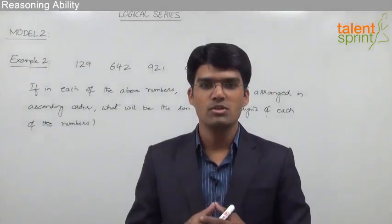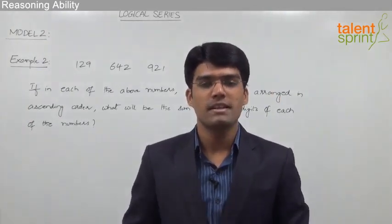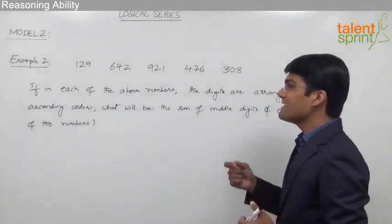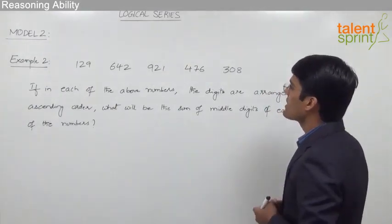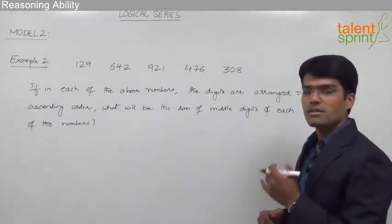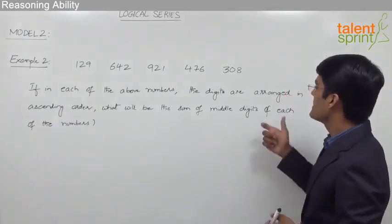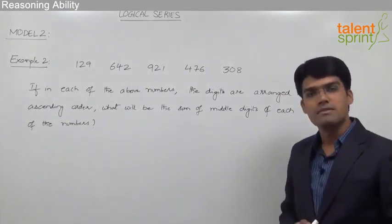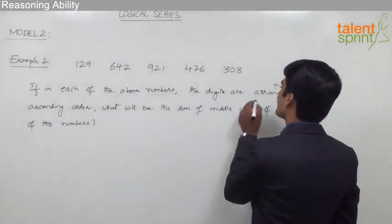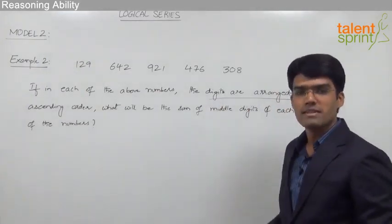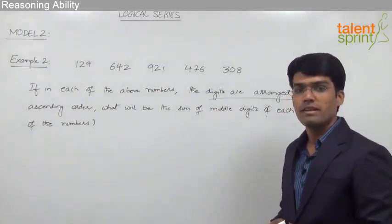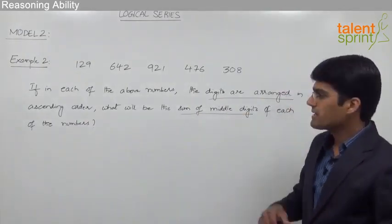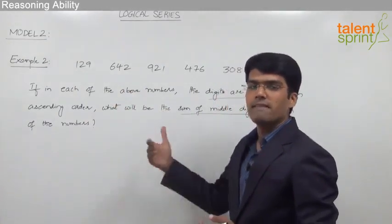Let us now take another example from model 2 of logical series where a set of three-digit numbers are given. The numbers are 129, 642, 921, 476 and 308. The question is: if in each of the above numbers the digits are arranged in ascending order, what will be the sum of the middle digits of each of the numbers? Ascending order means increasing order; we first arrange all the digits in each number, then find the sum of the middle digits.